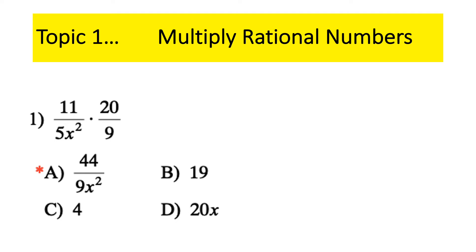So let's look at question one on the practice test. I've got 11 over 5x squared times 20 over 9. Cross-reduce the 5 and the 20: 5 goes into 5 once, 5 goes into 20 four times. Multiply straight across — we get 44 over 9x squared. That's answer A. Remember, when you multiply like variables, you add the exponents.